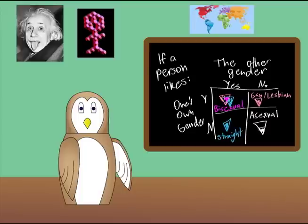If we consider gender as a binary for now, we get four basic categories of orientation. They're straight if the people that a person likes are all of the opposite gender; gay or lesbian if the subjects of a person's attractions are all of the same gender as that person; bi if the people a person likes is made up of both genders; and asexual if a person isn't attracted to anyone.